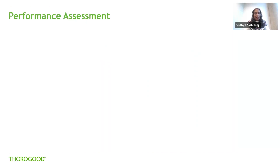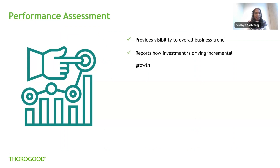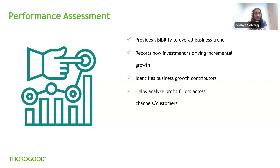Let's look at each of these in more detail. The tool is built as a suite of dashboards, and each vertical has a bunch of dashboards reporting key KPIs. For performance assessment, it provides visibility to overall business trends and helps us understand how our business performs across the specific landscape. It helps report the investment and how it's driving incremental growth across different portfolios. It helps identify business growth contributors. We can also analyze profit and loss across channels and customers, and in turn understand price behavior within and across categories.